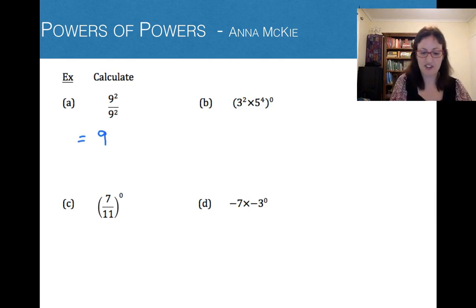So this is the equivalent of 9 to the power of 2 take 2. That's the rule. 2 take 2 gives us 0. Now anything to the power of 0 is 1, and that's our answer.